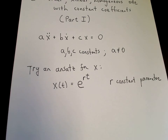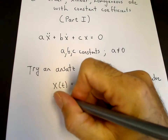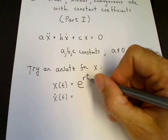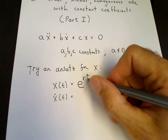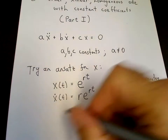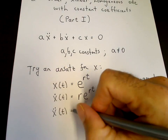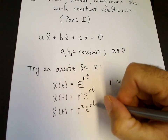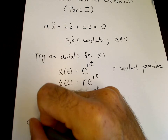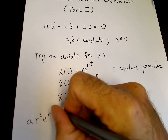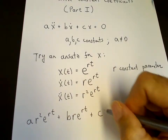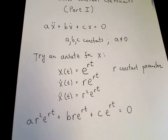The advantage of this ansatz is that the exponential function will cancel. x-dot gives us r·e^(rt), since the derivative of the exponent with respect to time is r, a constant. The second derivative repeats this process, giving r²·e^(rt). Substituting into the differential equation: a·r²·e^(rt) plus b·r·e^(rt) plus c·e^(rt) equals zero.